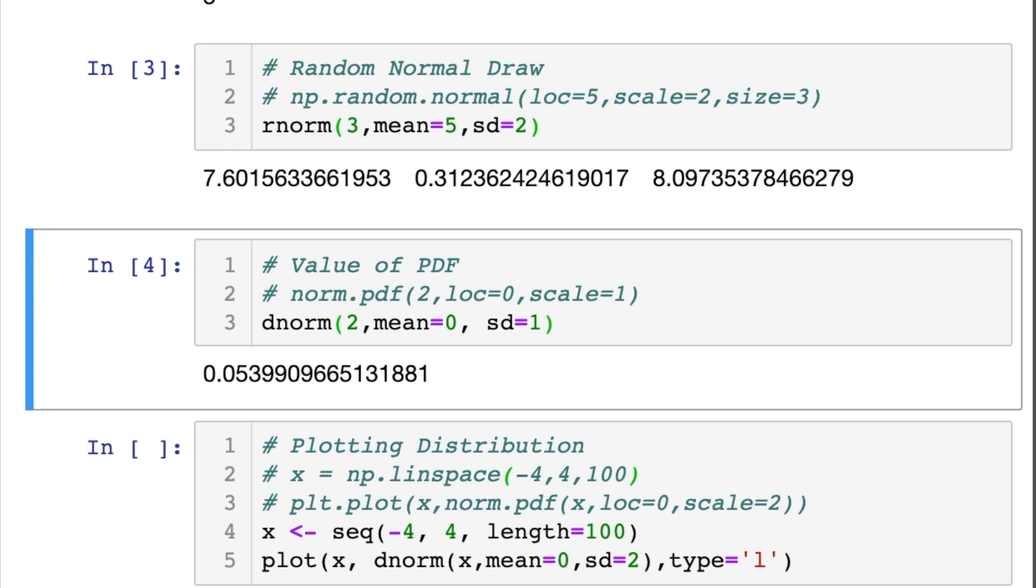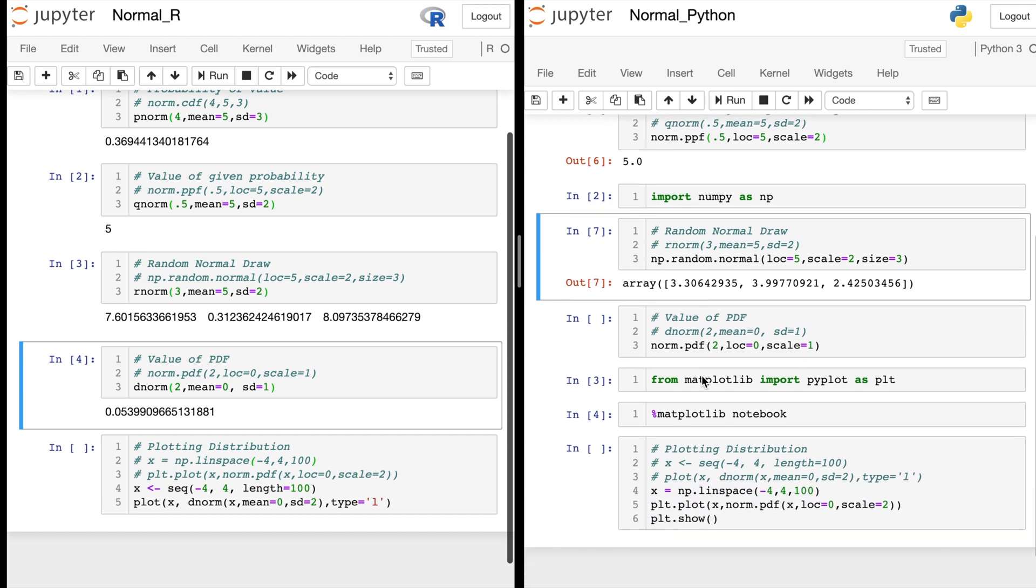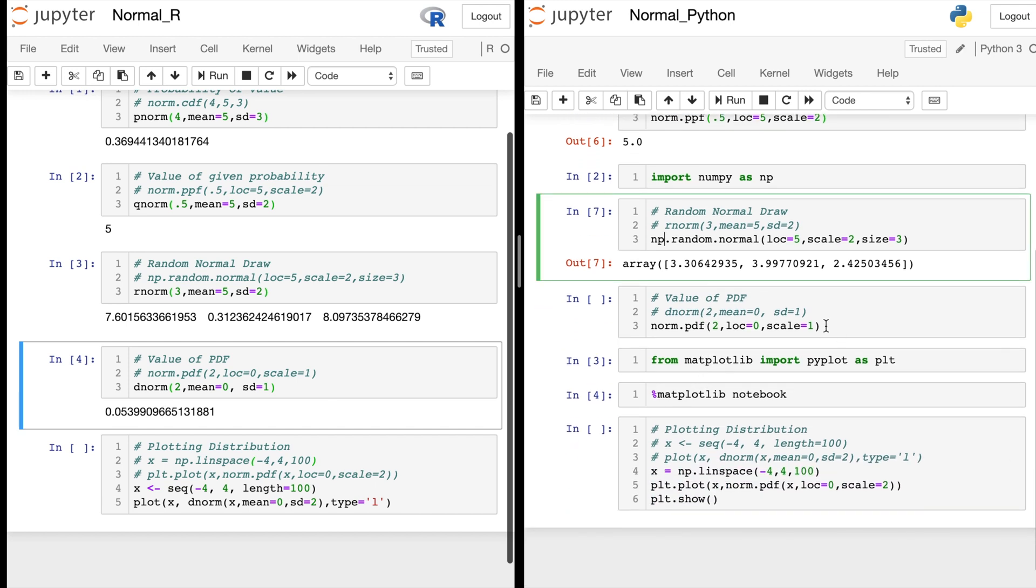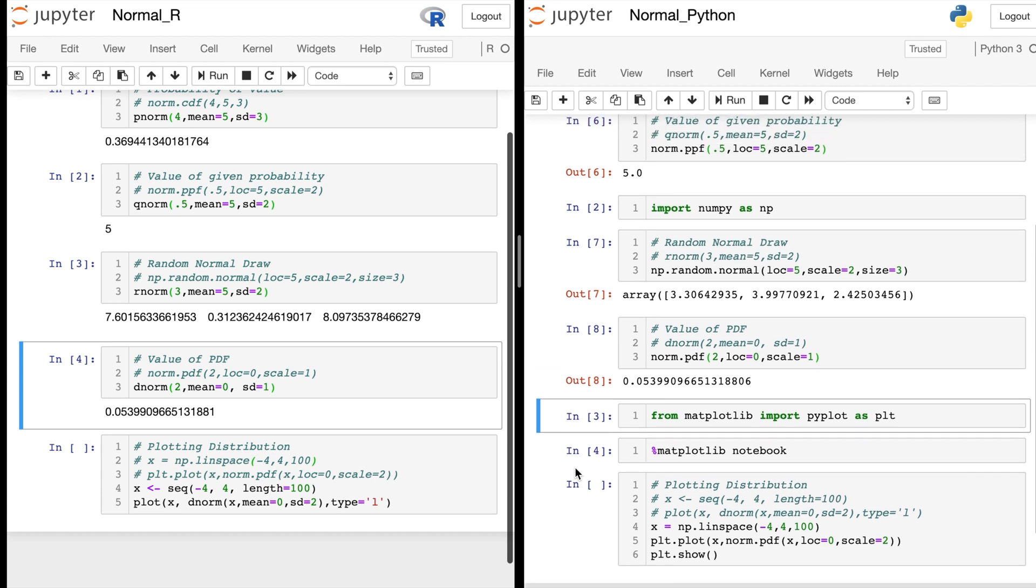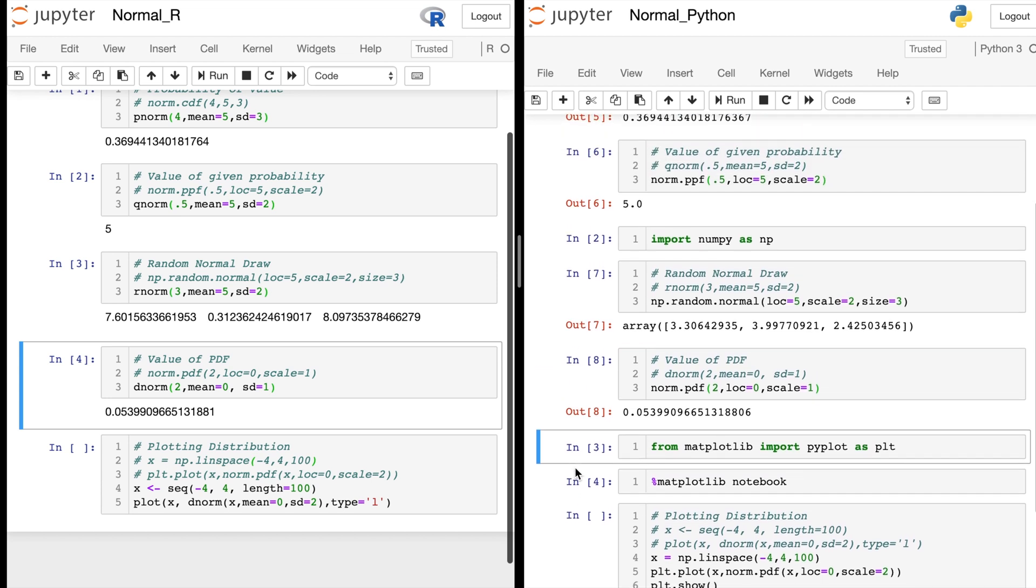In Python, the equivalent to do this is norm.pdf, which makes a lot of sense that they called it PDF, since that's exactly what it's doing. And you can give it 2, loc equals 0, scale equals 1, and that should give us the exact same thing. Let's just double check that. We'll run it here, 0.05. Perfect.